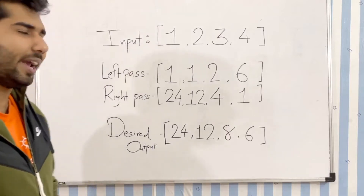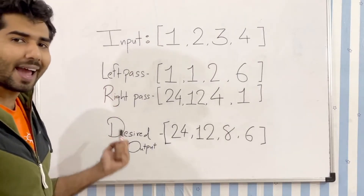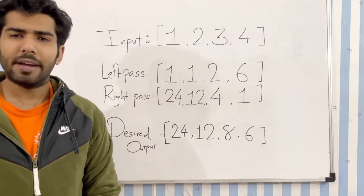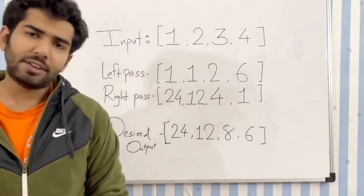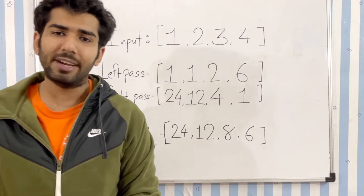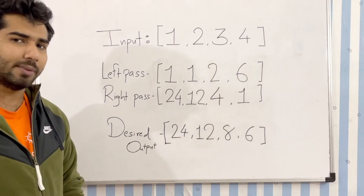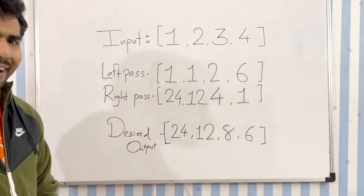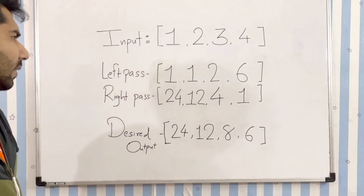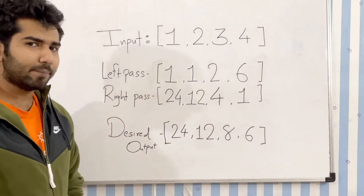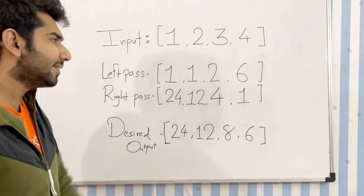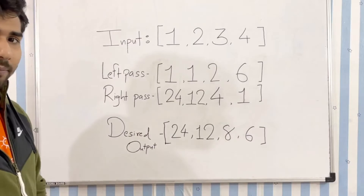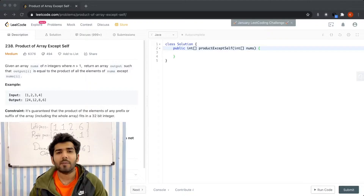In this approach we are using 2 extra arrays for the left pass and the right pass, so the space complexity is O(N). The follow-up part of the question asks if we can do it without using any extra space — that means space complexity should be O(1). Can we do all the computation in a single array? The left pass stays the same — can we do the right pass computation in that same array and return it?